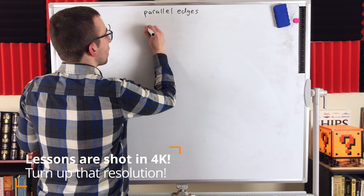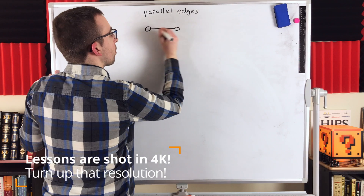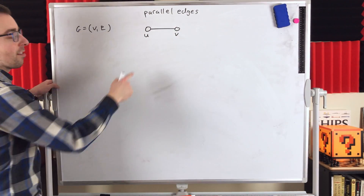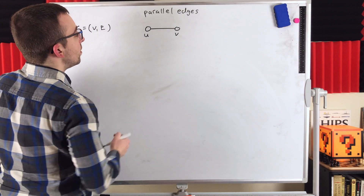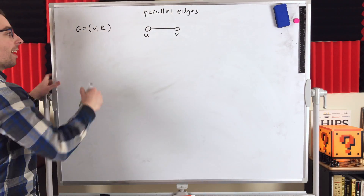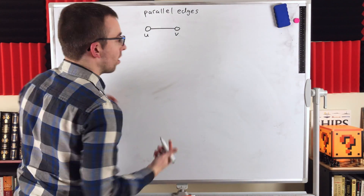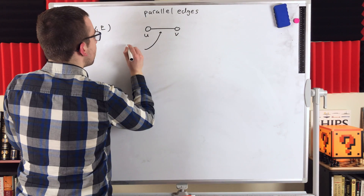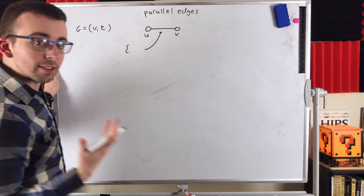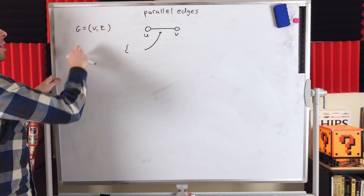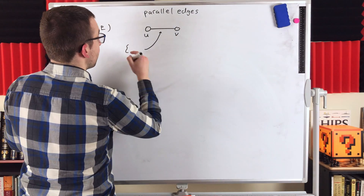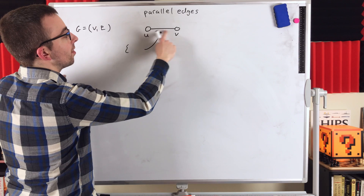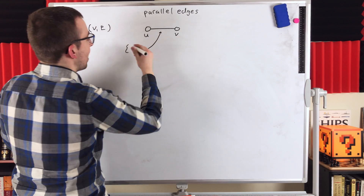We'll start looking at a super simple example of a graph. The vertex set of this graph just contains these two vertices u and v, and the edge set contains every edge of the graph. This graph only has one edge, which we define as a two-element subset of the vertex set. The two elements in this set are the end vertices of the edge — in this case, u and v.